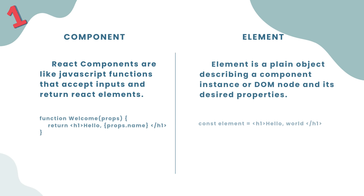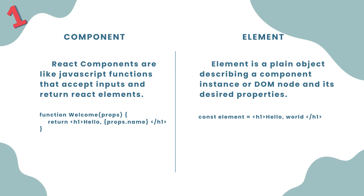Number 1: React components are like JavaScript functions that accept inputs and return React elements, while an element is a plain object describing a component instance or DOM node and its desired properties.